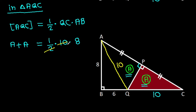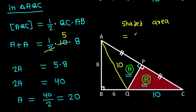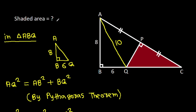And 2 times 5 is 10. So 2A equals 1/2 times QC is 10 times AB is 8, giving 2A equals 5 times 8, and 2A is 40. So A will be 40 over 2, that will be 20. So shaded area is area of CPQ, and it is A, that is 20.